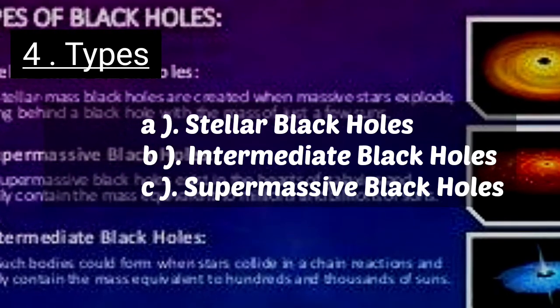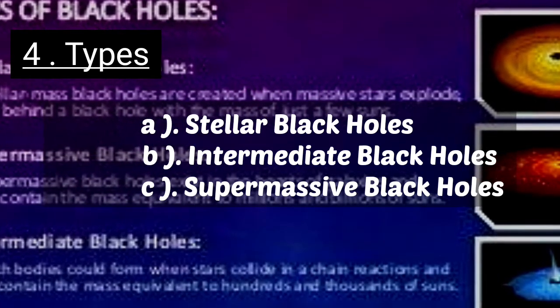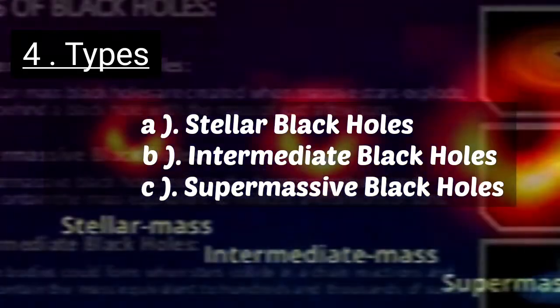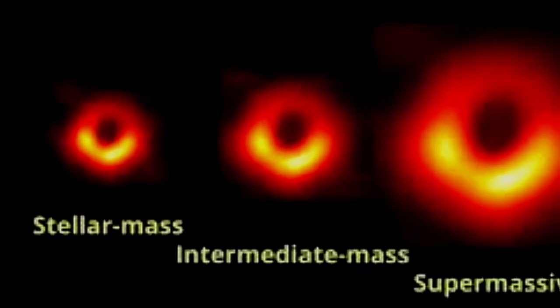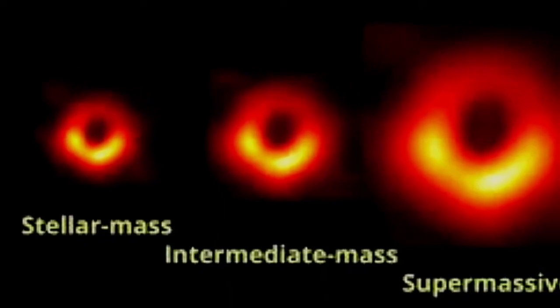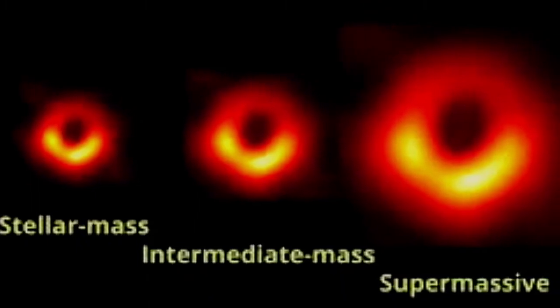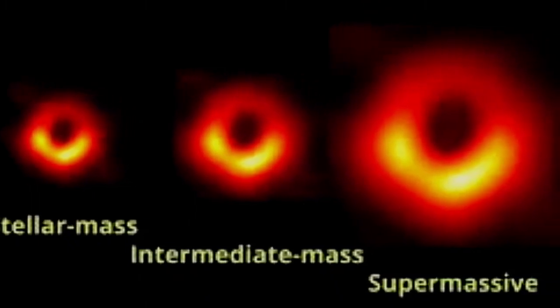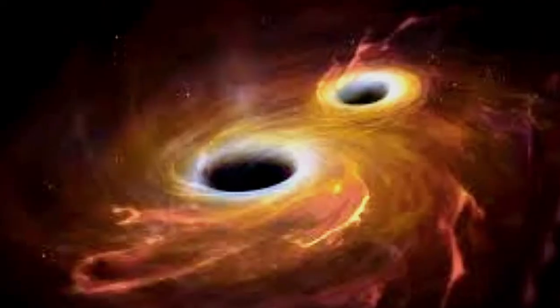Stellar black holes are formed when massive stars explode, leaving behind a black hole with a mass of just a few suns. Intermediate black holes could form when stars collide in chain reactions, and usually contain a mass equivalent to hundreds and thousands of suns. Supermassive black holes exist in the hearts of galaxies and usually contain a mass equivalent to millions and billions of suns.